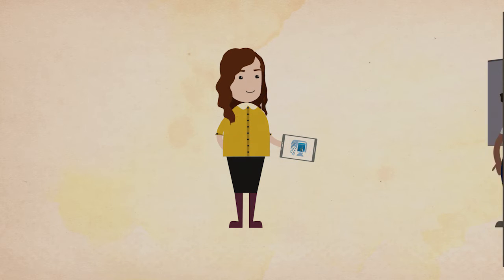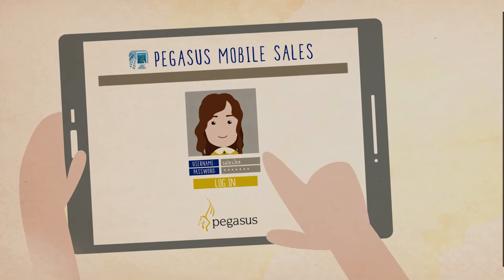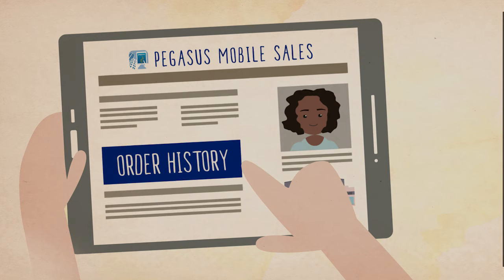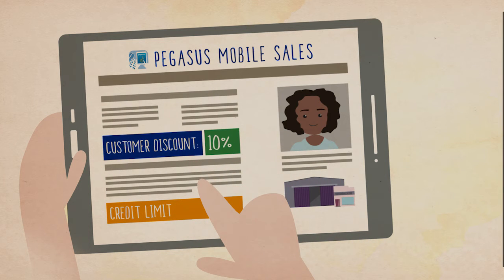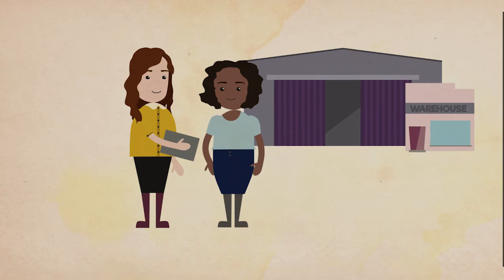When Jen meets her clients she has their account information to hand. She can instantly see their order history, discounts, credit limit and outstanding invoices because mobile sales is integrated with Opera 3.